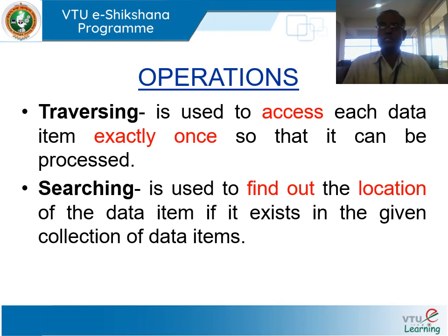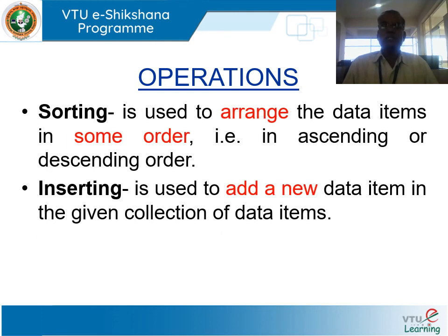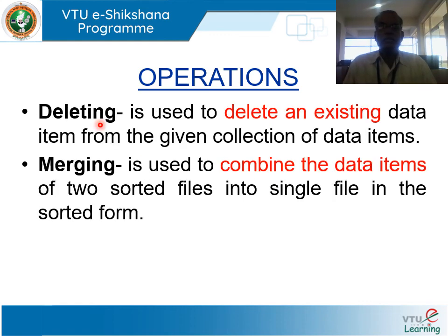What operations can we perform on data structures? Traversing is used to access each data item exactly once so that it can be processed. Searching is used to find the location of a data item in a given collection. Sorting arranges data items in ascending or descending order. Inserting adds a new data item to the existing collection. Deleting removes an existing data item from the collection. Merging combines data items of two sorted files into a single sorted file.